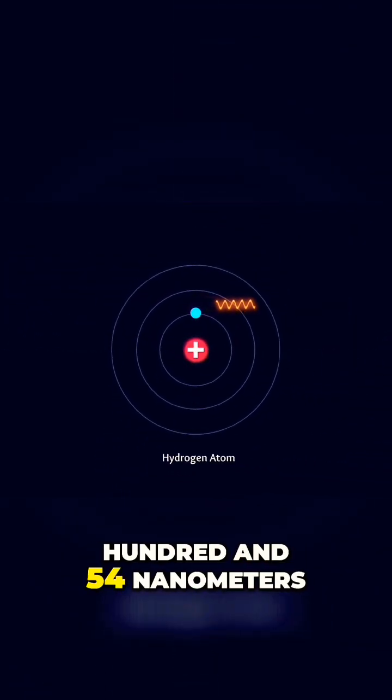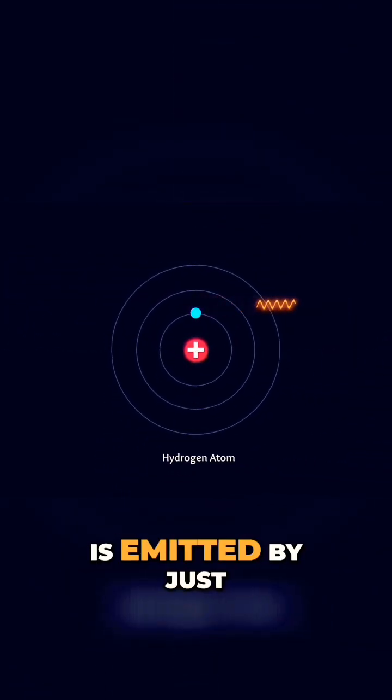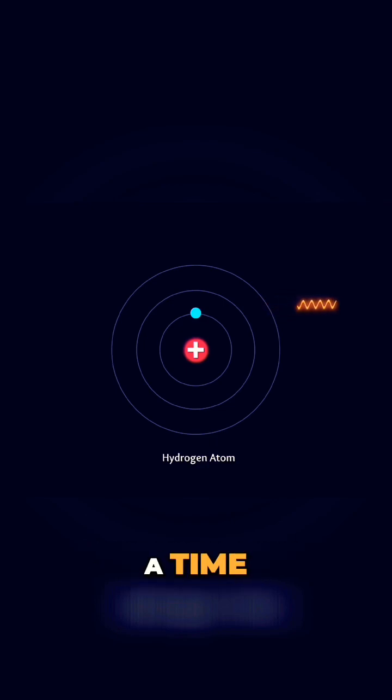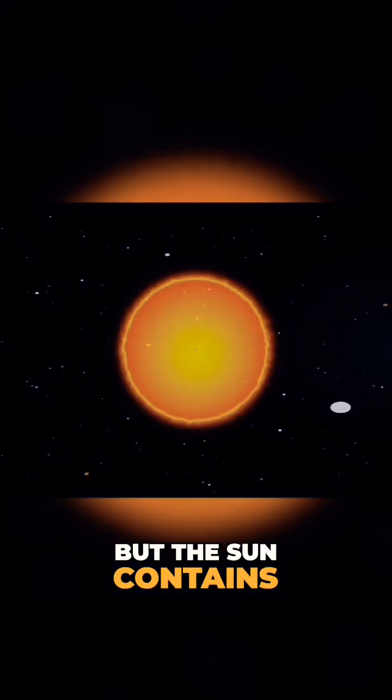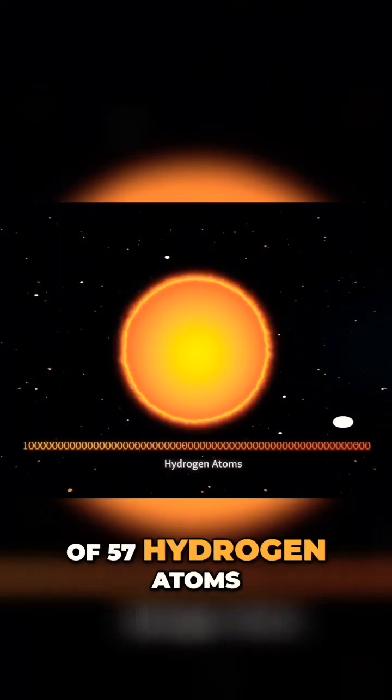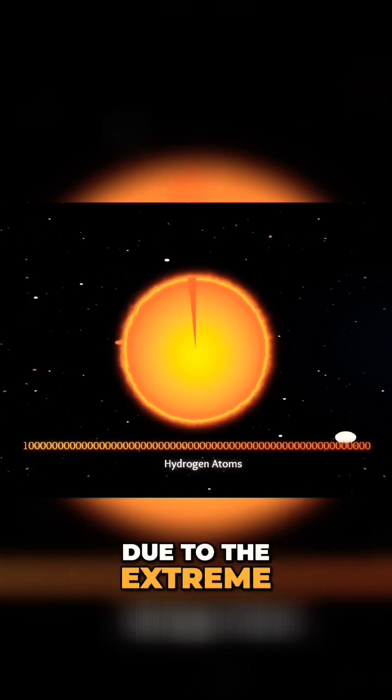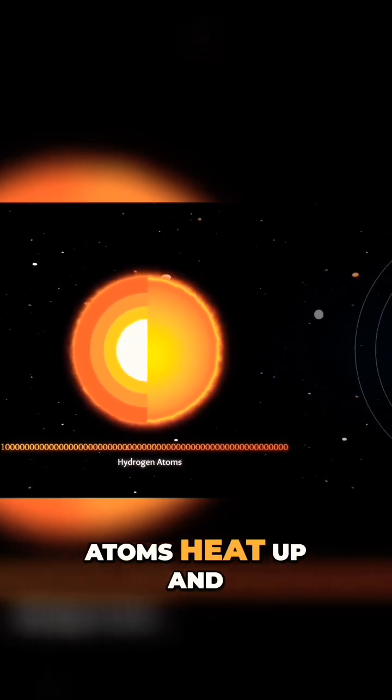A wavelength of 654 nanometers is emitted by just one hydrogen atom at a time, but the sun contains 10 to the power of 57 hydrogen atoms. Due to the extreme pressure of the sun's inner core, atoms heat up